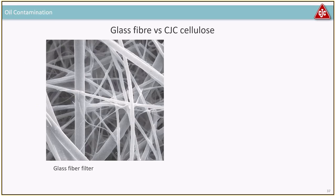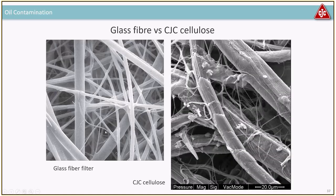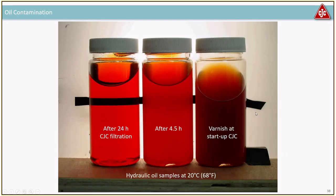If you zoom in on glass fibers versus CTC cellulose fibers, the glass fibers are quite uniform in size and particles are blocked by the hole sizes. In the CTC cellulose, there are big structural fibers of about 20 microns that hold the structure in place, plus many tiny nano fibers — a patent from CC Jensen — enabling much finer filtration to remove varnish, particles, and water. Here's a demonstration: a startup hydraulic system where after 4.5 hours you can start to see through the bottle, and after 24 hours the particles and varnish have been removed — all because of the depth material.